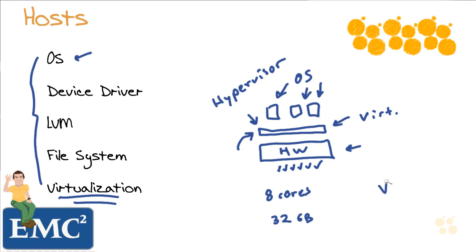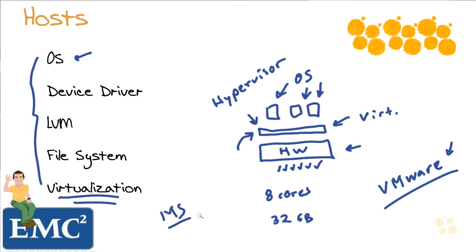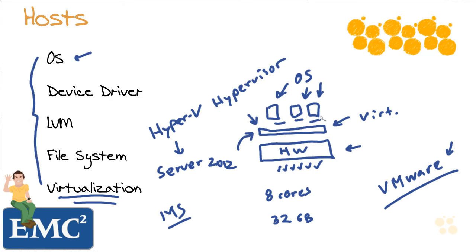One of the companies that really pioneered virtualization and still is a huge player today is VMware. There are plenty of VMware courses available here at CBT Nuggets — it's such an important technology. But they're not the only player. For instance, Microsoft in their Server 2012 system allows you to add a hypervisor chained to the operating system called Hyper-V. With Hyper-V, we can run different operating systems inside that scope of virtualization.